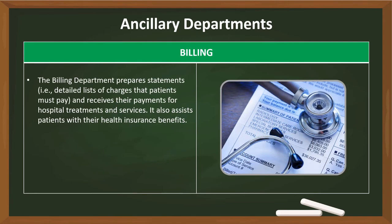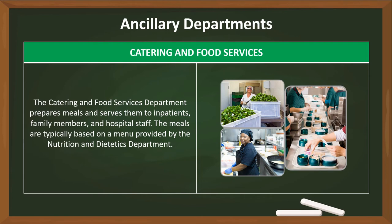Now let's proceed to ancillary departments, which support the work of clinical departments. The admissions department asks patients to provide their personal information and sign consent forms before they are taken to another department for inpatient care. The billing department prepares statements — that is, detailed lists of charges that patients must pay — and receives their payments for hospital treatments and services. It also assists patients with their health insurance benefits. This department is also known as patient accounts. The catering and food services department prepares meals and serves them to inpatients, family members, and hospital staff. The meals are typically based on a menu provided by the nutrition and dietetics department.